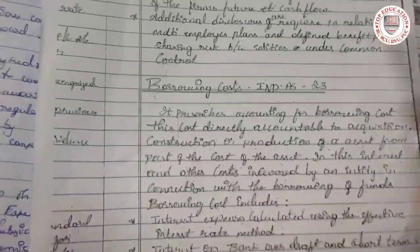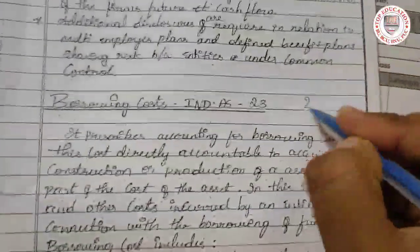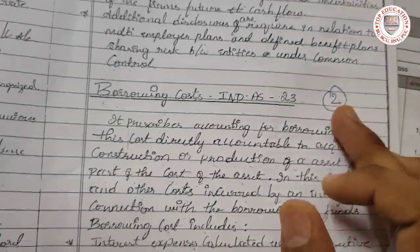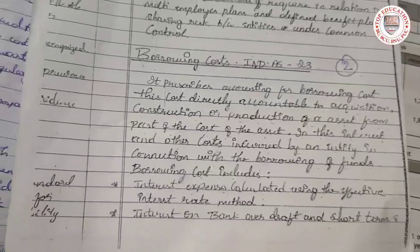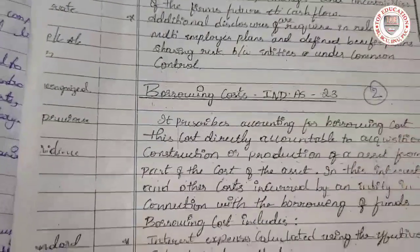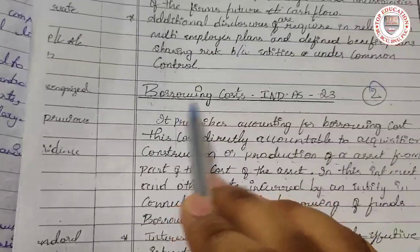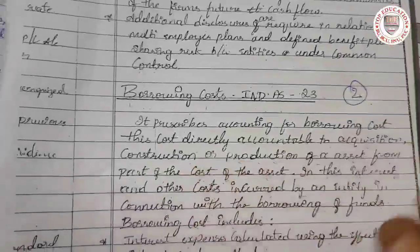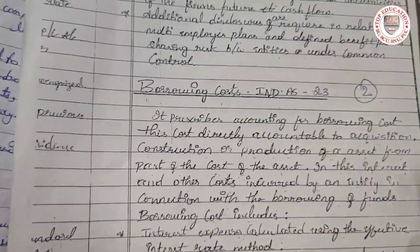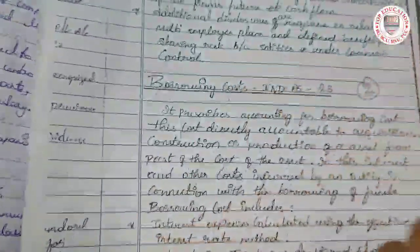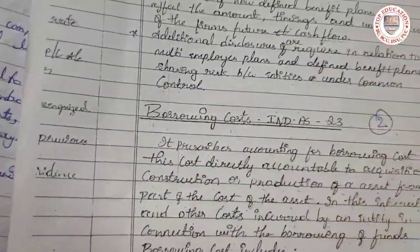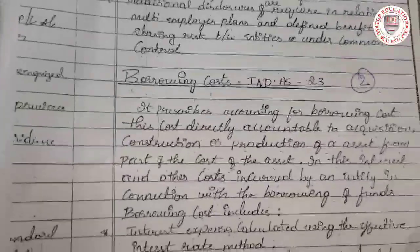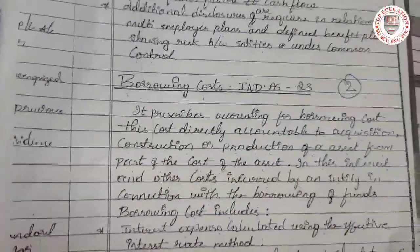Welcome to Top Education. In this session we are doing borrowing cost. There are two methods in borrowing cost: one is the normal one, and the other is about currency exchange. First, what is borrowing cost? Borrowing cost is a cost incurred while acquisition or production of an asset or goods and services. Borrowing means we have borrowed, and the cost of that borrowing is known as borrowing cost.